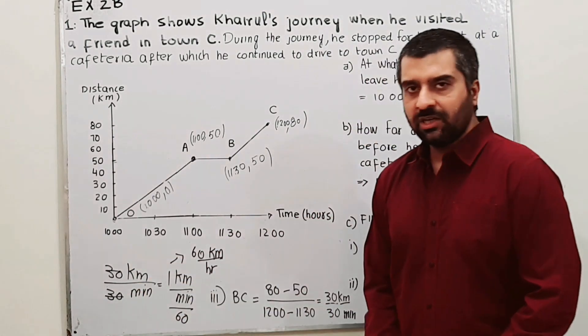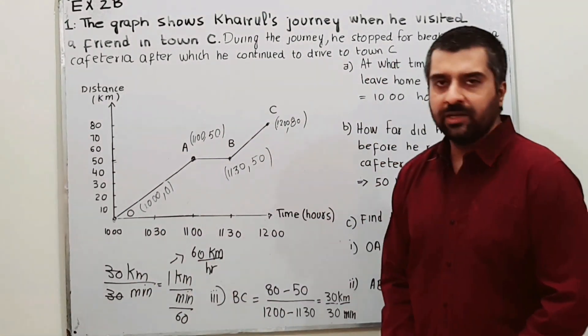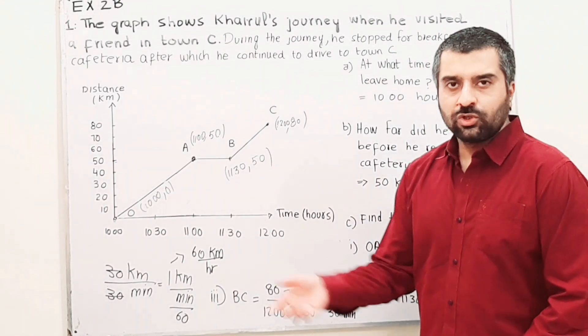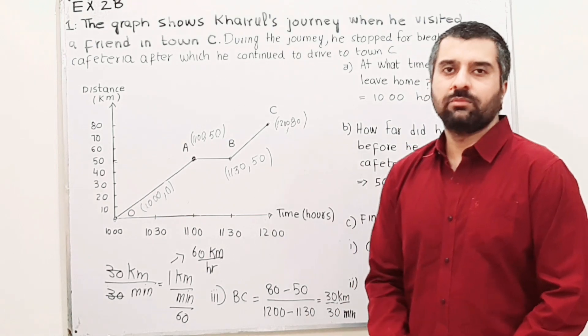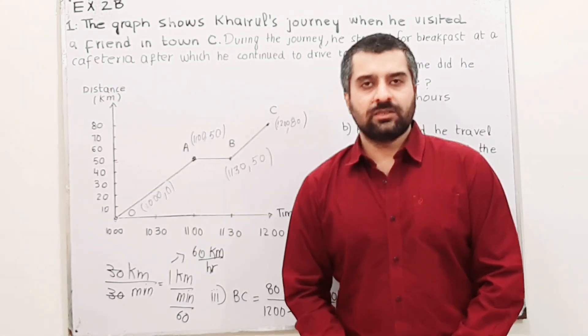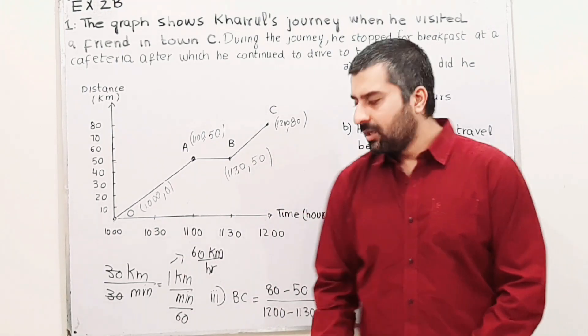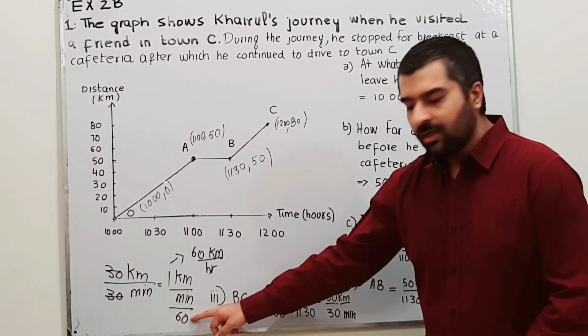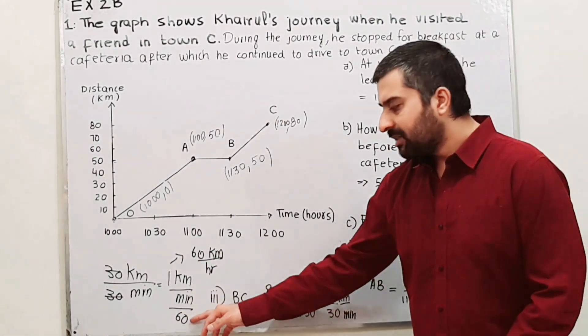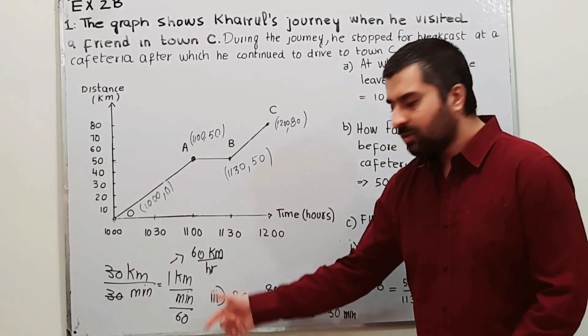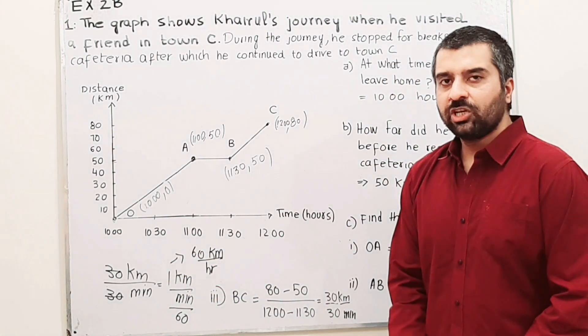30 kilometers over 30 minutes, cancel 30 with 30. Answer will be 1 kilometer per minute. In order to convert minutes into hours, we need to divide by 60 because 1 hour has 60 minutes. Divide this minute by 60. Your answer will be 60 kilometers per hour. After dividing minute by 60, this is converted into hours, while this 60 will move to the numerator. Your answer will be 60 kilometers per hour.